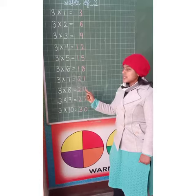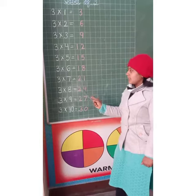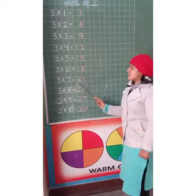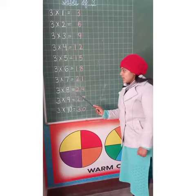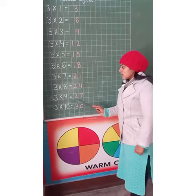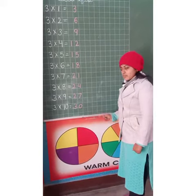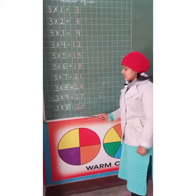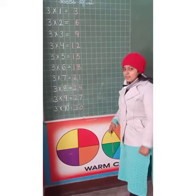3, 6's are 18. 3, 7's are 21. 3, 8's are 24. 3, 9's are 27. 3, 10's are 30.